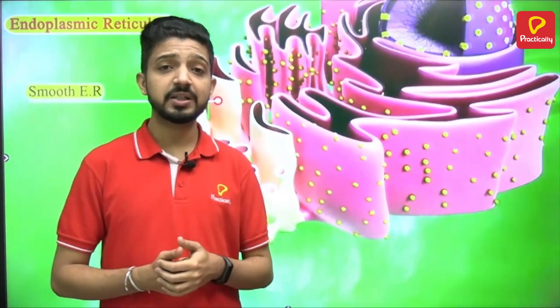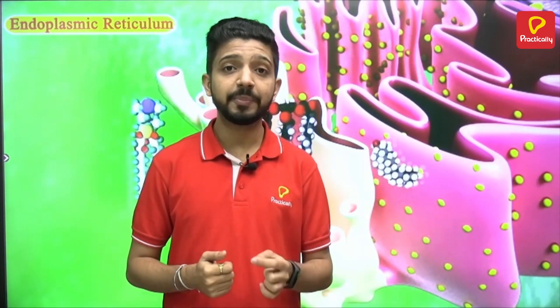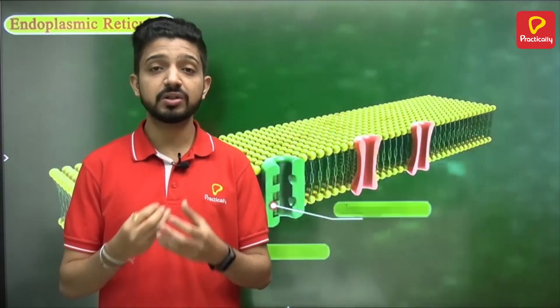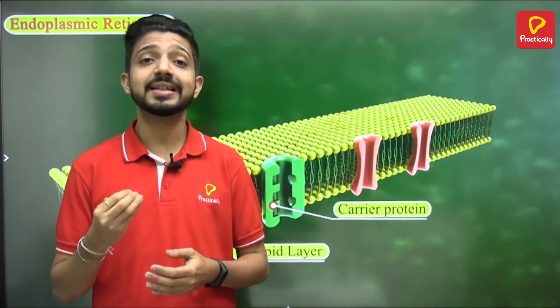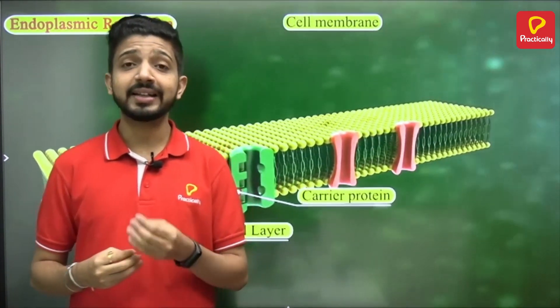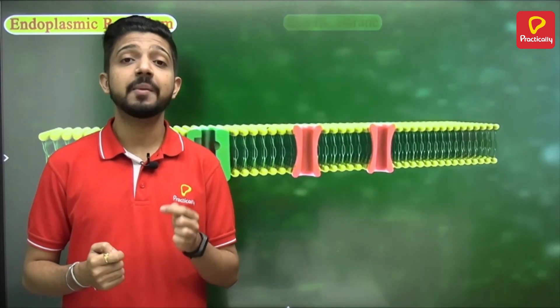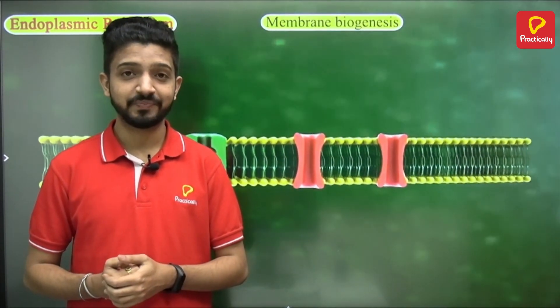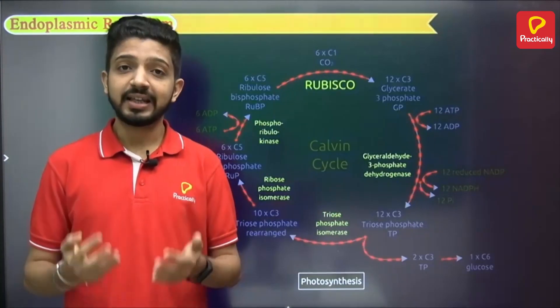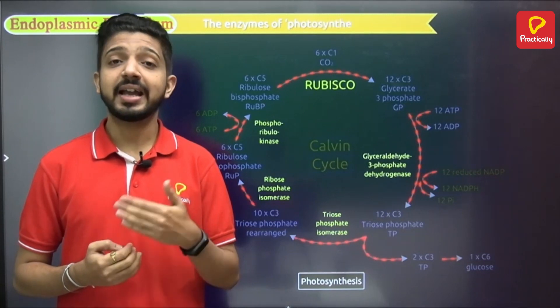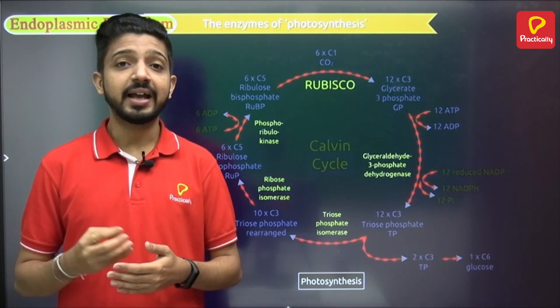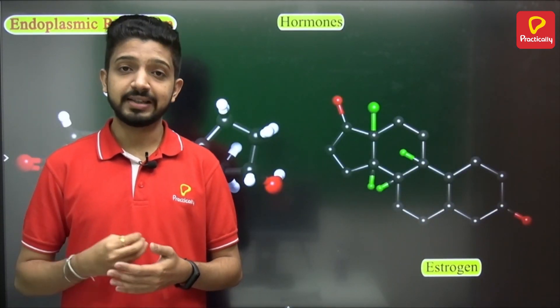The smooth endoplasmic reticulum helps in the synthesis of lipids or fats. Some of these lipids and proteins help in the constitution of the cell membrane, like carrier proteins, and this process is called membrane biogenesis. The smooth ER also helps in various other functions such as the production of enzymes and hormones within the cell.